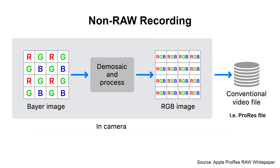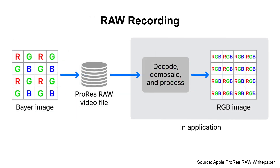For conventional video, de-mosaicing and other processing operations are performed in camera to produce viewable RGB images recorded into a video file, like a ProRes clip. At playback time, an application only needs to decode the conventional video file to produce RGB images that can be edited and displayed — the de-mosaicing and processing have already been performed by the camera at capture time and are, so to speak, burned in. In contrast, ProRes RAW directly encodes the Bayer pattern image, so the de-mosaicing and processing are now performed by the software reading the ProRes RAW file. This applies to any RAW file, actually. The big advantage is that the de-bayering and processing algorithms are not tied to the hardware, but can be improved over time and yield higher quality images from the same raw material.